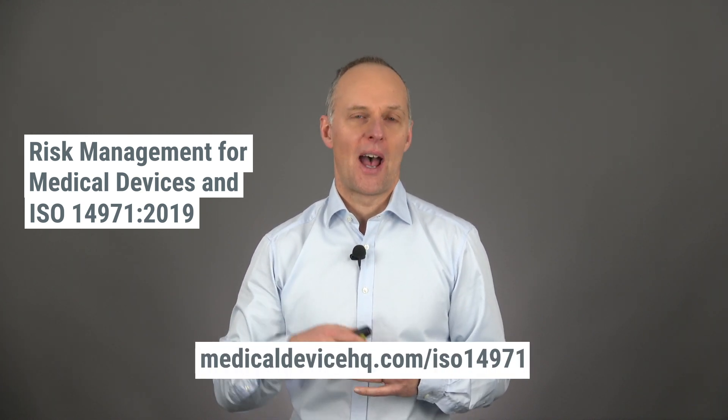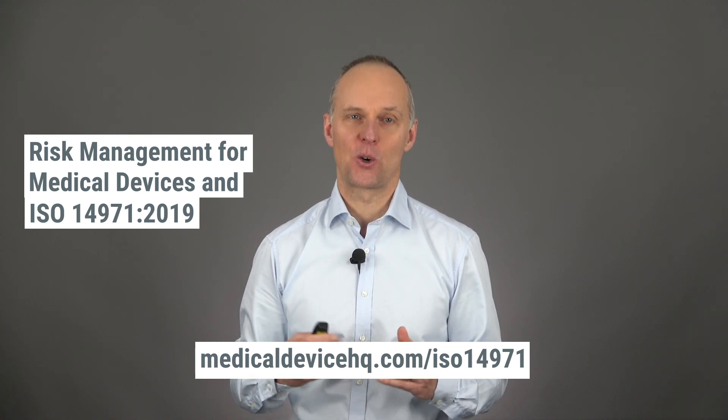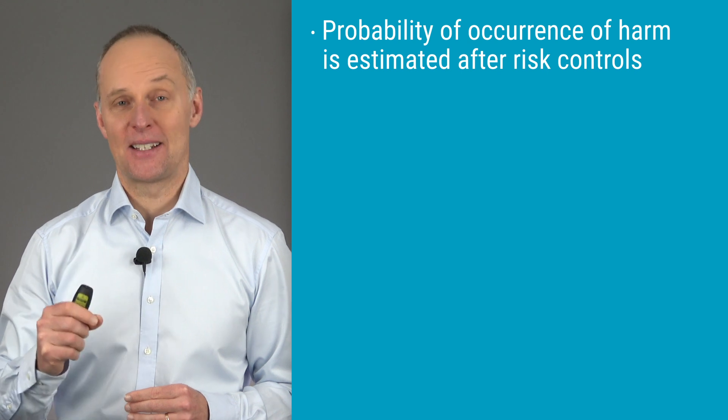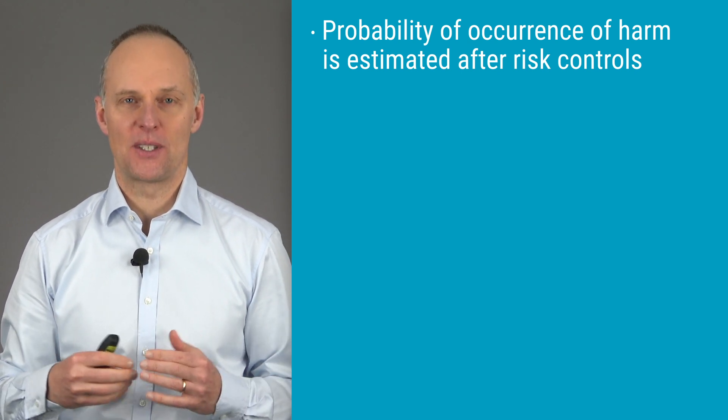Please do subscribe to my channel by clicking the subscribe button. If you want to learn more about risk management, I welcome you to register for my online course Introduction to Risk Management for Medical Devices and ISO 14971-2019 through medicaldevicehq.com. Then, what are the most common mistakes? One of the most common mistakes is that the probability of occurrence of harm is estimated after risk controls have been implemented in the risk analysis — this estimate should be done before risk control measures.